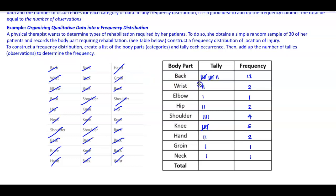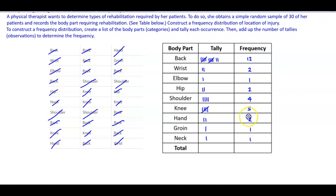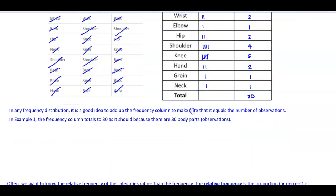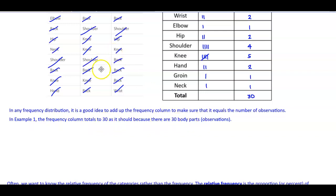Once we have all the frequencies, we add them up. Adding all values together gives us a total of 30. In any frequency distribution, it's a good idea to add up the frequency column to make sure it equals the number of observations. In this example, the frequency column totals to 30, as it should, because there are 30 patients — meaning 30 observations.